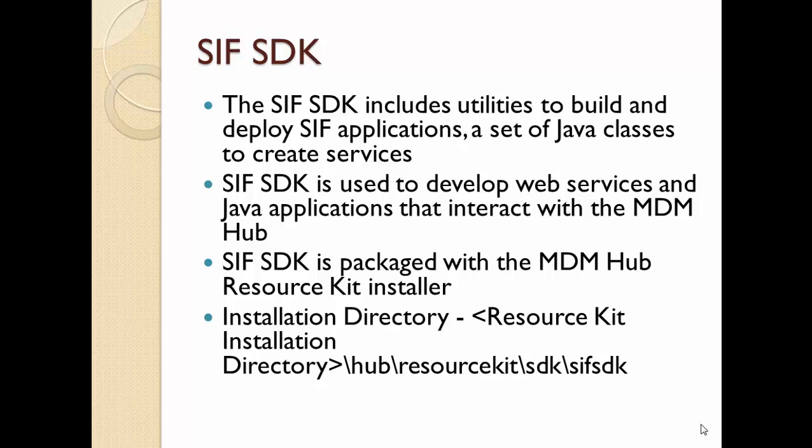In order to install the SIF SDK, you have to use the Resource Kit installer and follow some steps for the Resource Kit installation directory. Whenever you install the Resource Kit using the Resource Kit installer, it will ask for a directory. You can provide any custom directory or you can use a directory inside the Hub Resource Kit SDK — the SIF SDK directory.